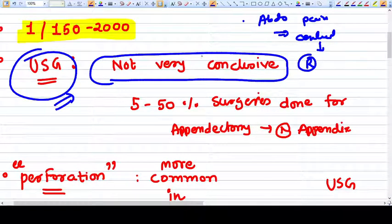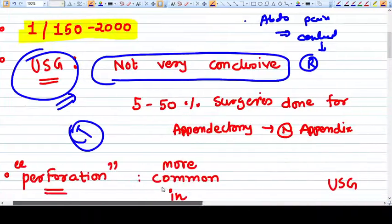CT scan is the choice, but with radiation exposure, many people try to avoid it. If clear-cut findings of acute appendicitis are there on ultrasound, they will go for surgery rather than CT scan.